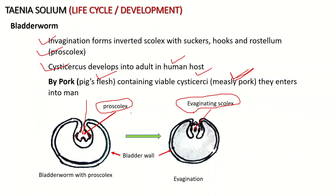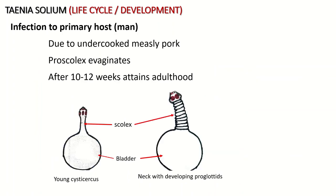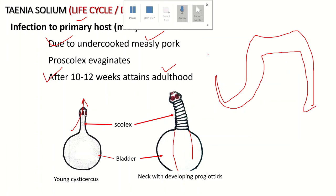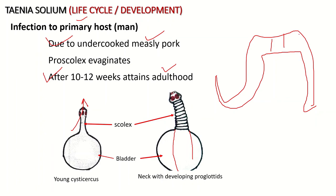The bladder dissolves and the organism forms a flat structure — also called a flatworm. This adult structure is made up of many proglottids: immature, mature, and gravid proglottids.